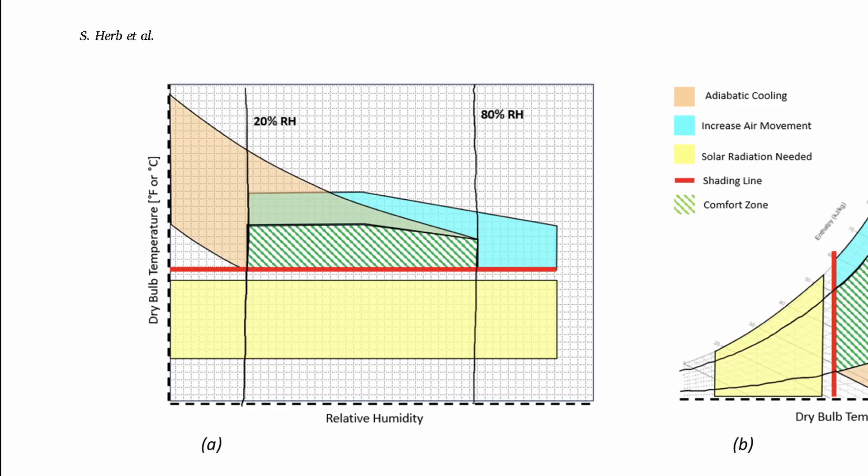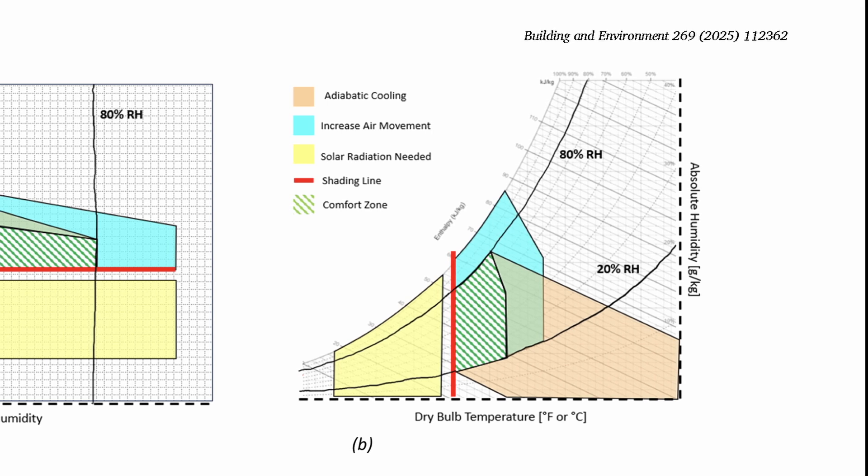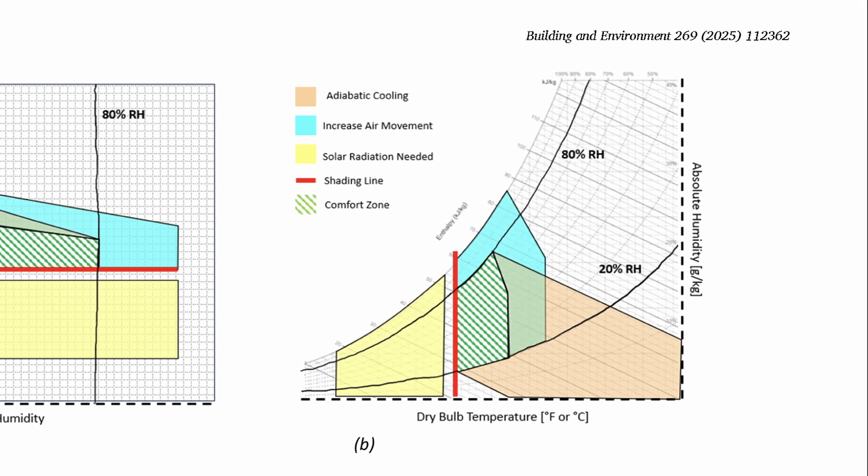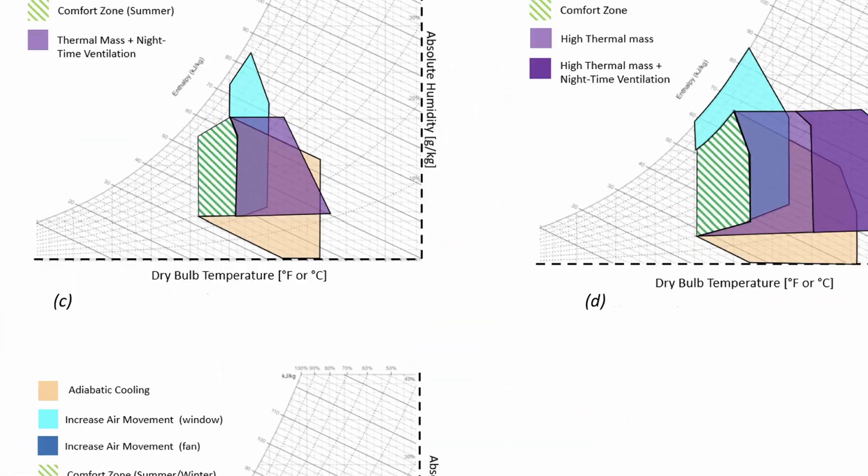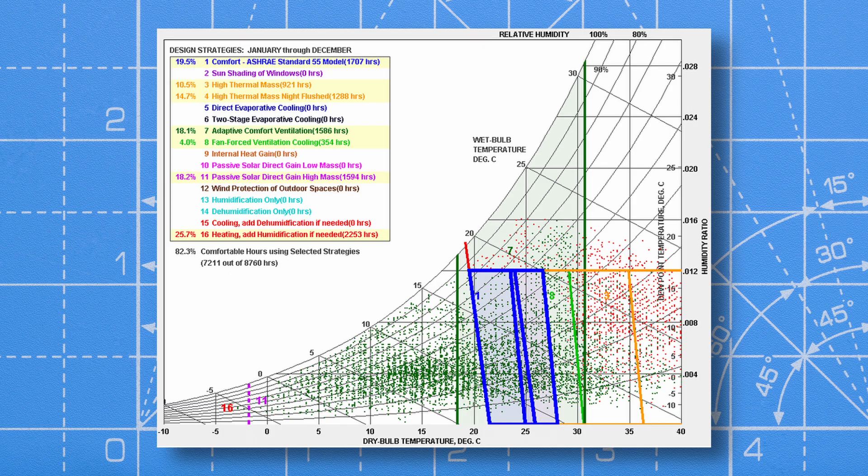The bioclimatic chart's origin traces back to Victor Olgyay in 1963. He combined comfort zones from the psychrometric chart with climatic elements to suggest design strategies. Givoni later redefined it, and then Givoni and Milne added considerations for thermal mass and night ventilation. This was all based on a deep understanding of building physics. The bioclimatic chart was later digitalized and is now included in a tool called Climate Consultant that many of you may have used.